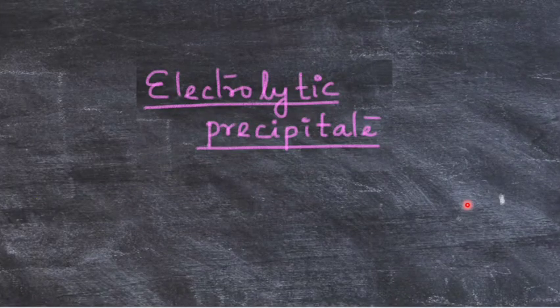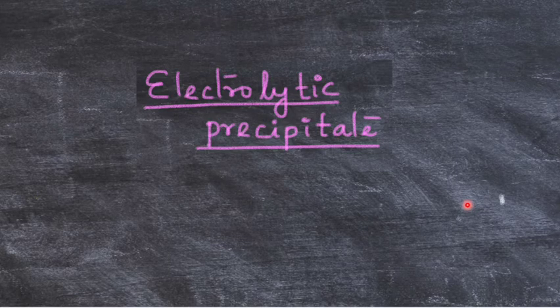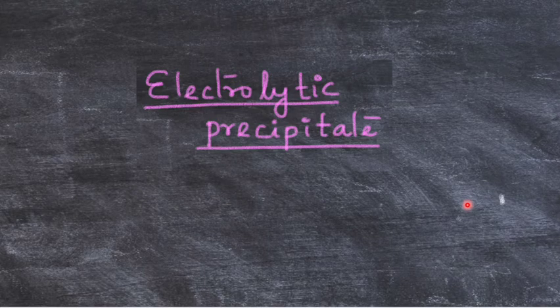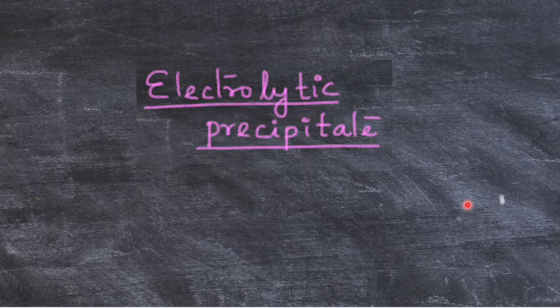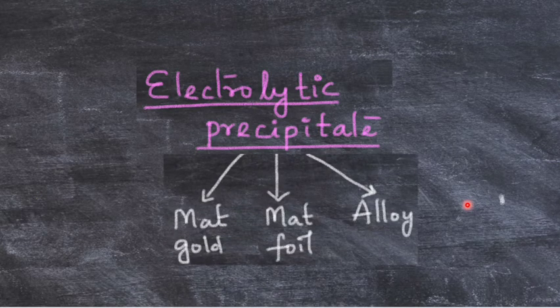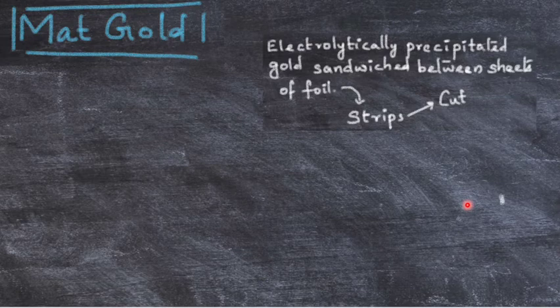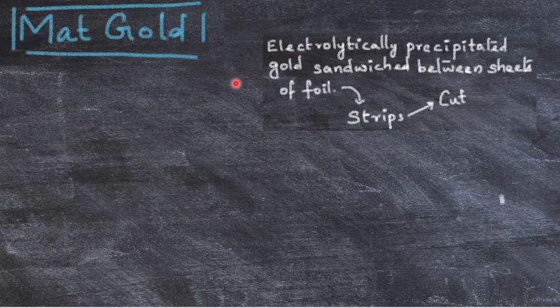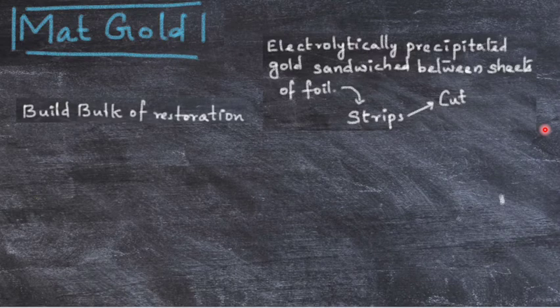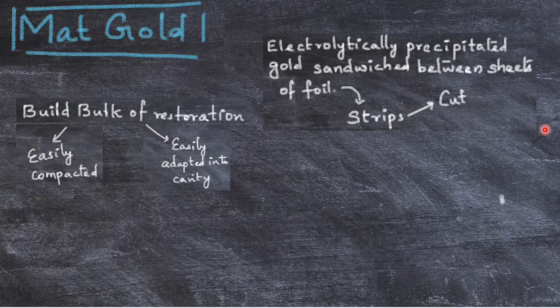Electrolytic precipitate: here crystalline gold powder is formed by electrolytic precipitate. The material has dendritic crystalline structure. These are heated at a fusion temperature, high temperature below its melting point, causing aggregation of the gold material, giving a precipitate. This is of three types: mat gold, mat foil, and alloyed form. Mat gold is electrolytically precipitated gold sandwiched between sheets of foil, then cut into strips of desired length. This is used to build the bulk of the restoration and can be easily compacted and adapted to the cavity.